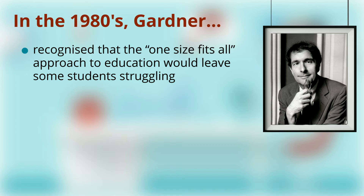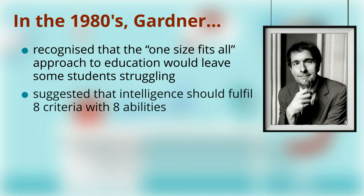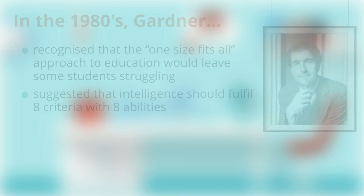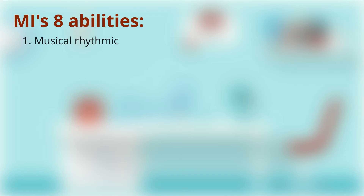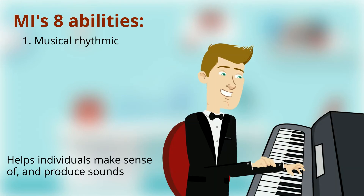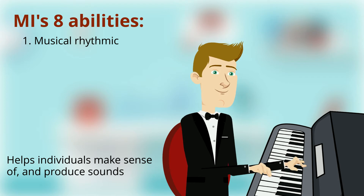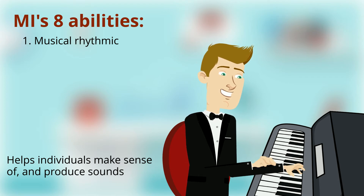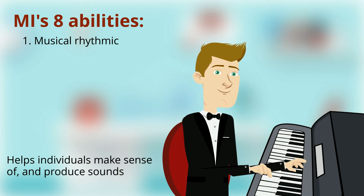Hence, with this in mind, he suggested that intelligence should fulfill eight criteria with eight abilities to meet these criteria. The first is Musical-Rhythmic intelligence, which helps individuals make sense of and produce sounds.